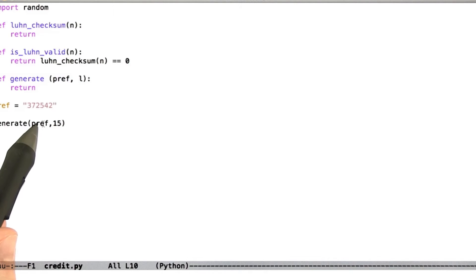The prefix might be 372542, which happens to be the prefix for a credit card I have in my pocket, and a 15-digit credit card number. You'll create a valid credit card number with the required properties.